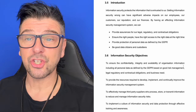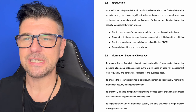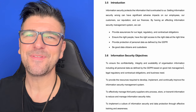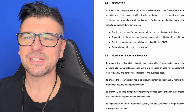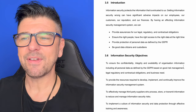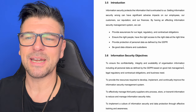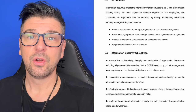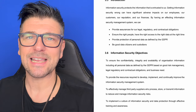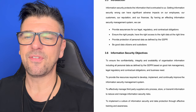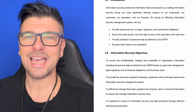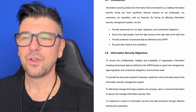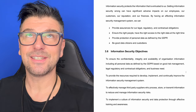We then provide an introduction. In our introduction, we're saying information security protects the information that is entrusted to us. Getting information security wrong can have significant adverse impacts on our employees, our customers, our reputation and our finances. By having an effective information security management system, we can provide assurances for our legal, regulatory and contractual obligations, ensure the right people have the right access to the right data at the right time, and we can be good data citizens and custodians.